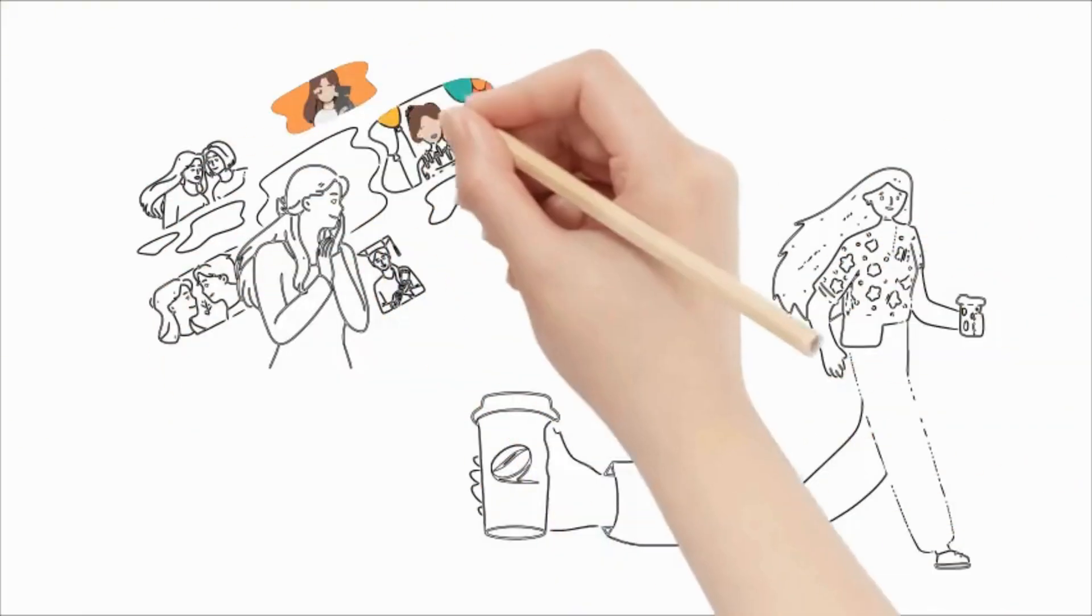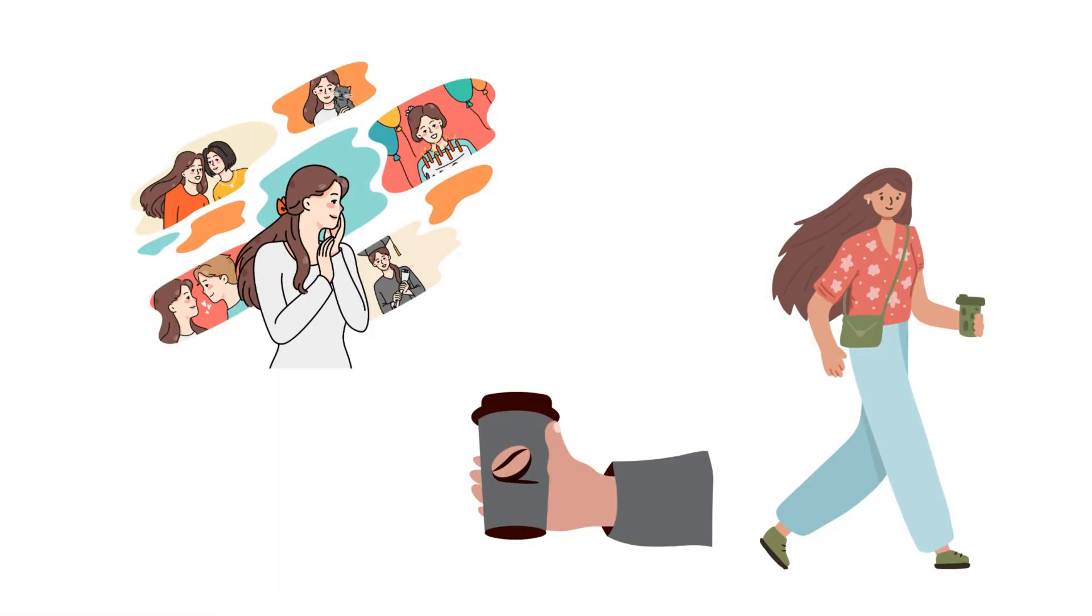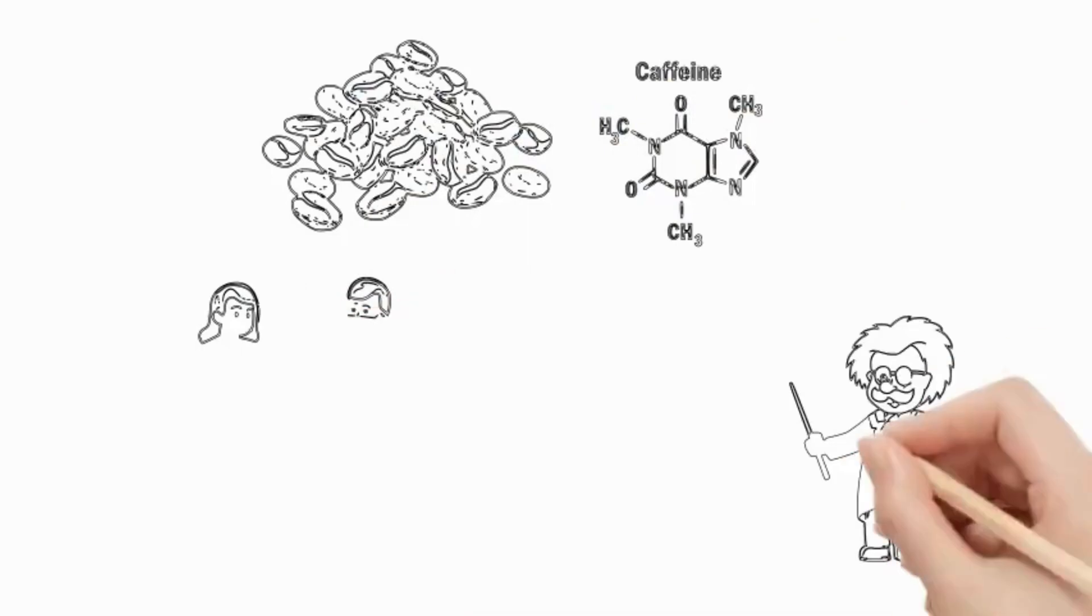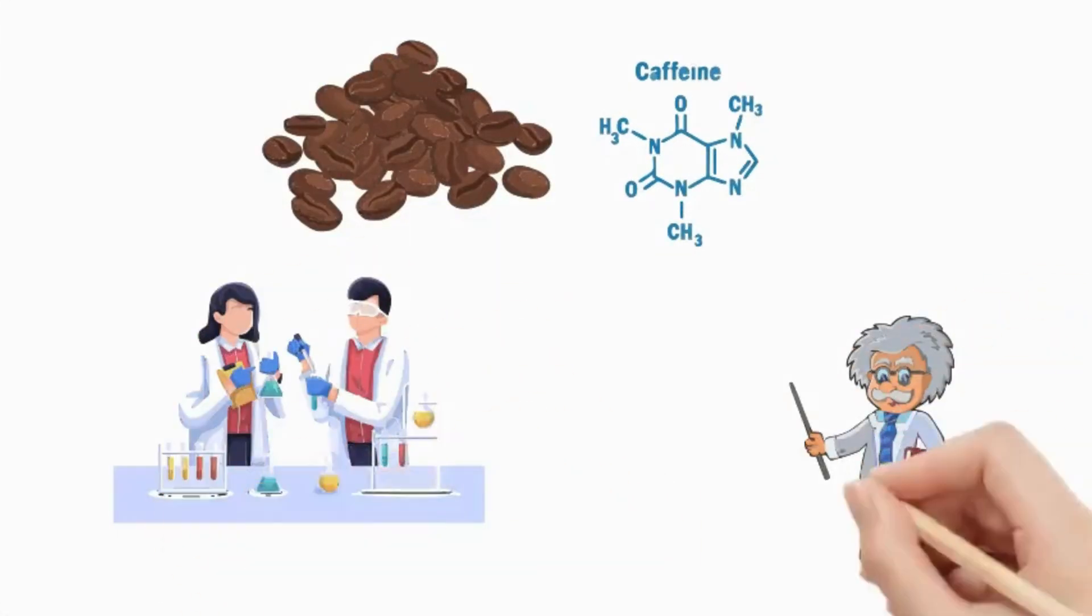The results showed that those who drank a cup of coffee performed better in identifying the correct images than those who did not. Scientists explained that caffeine affects the memory consolidation process, helping the brain store information more effectively.